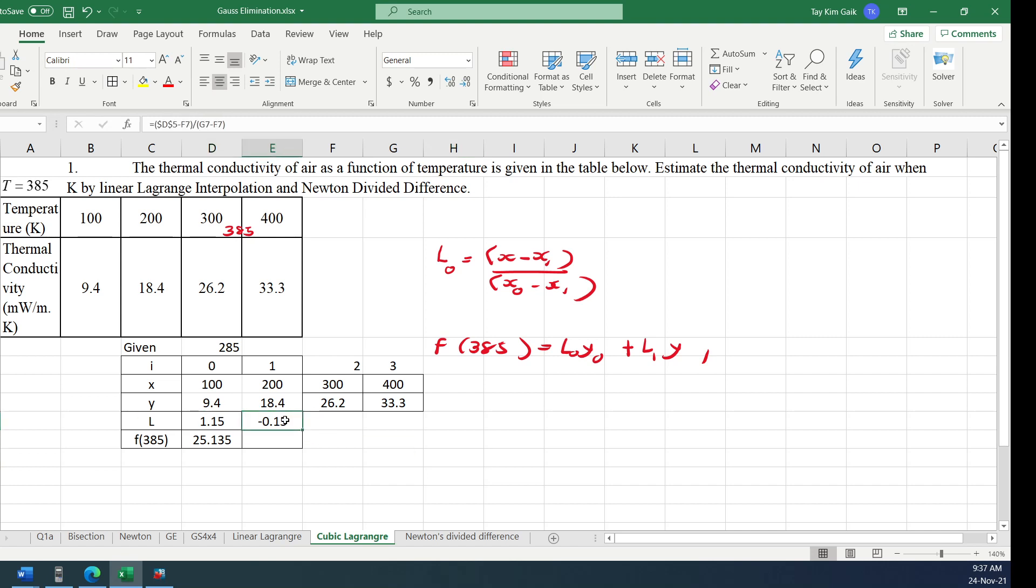So if cubic, check the answer. Then the L node total, you should have three terms. Another one is x minus x number two, x minus x number three, divided by x node minus x2, x node minus x3. Then this one: L node y node plus L1 y1 plus L2 y2 plus L3 y3. Just make sure you key in L node correctly.